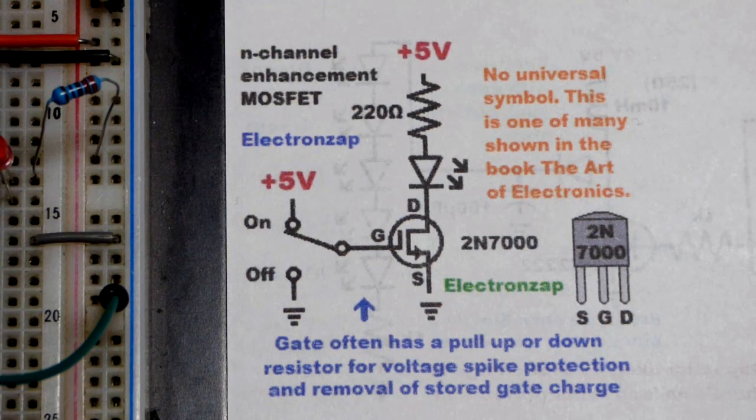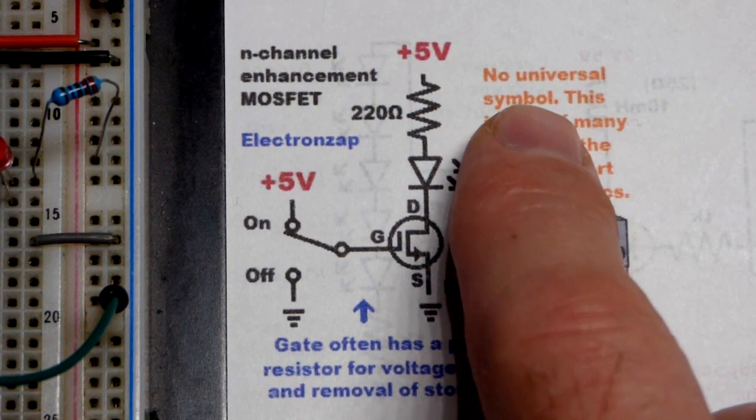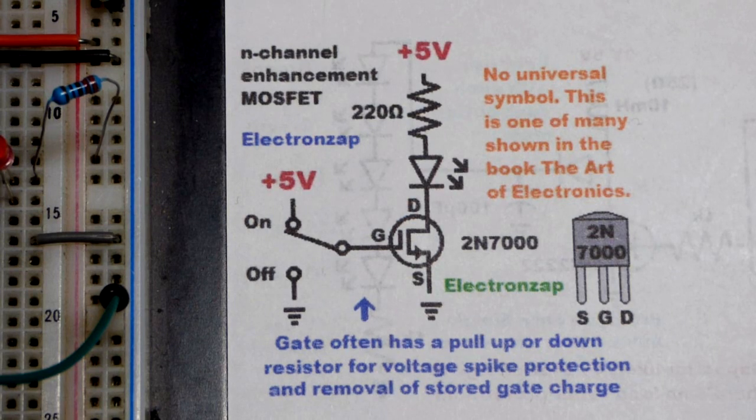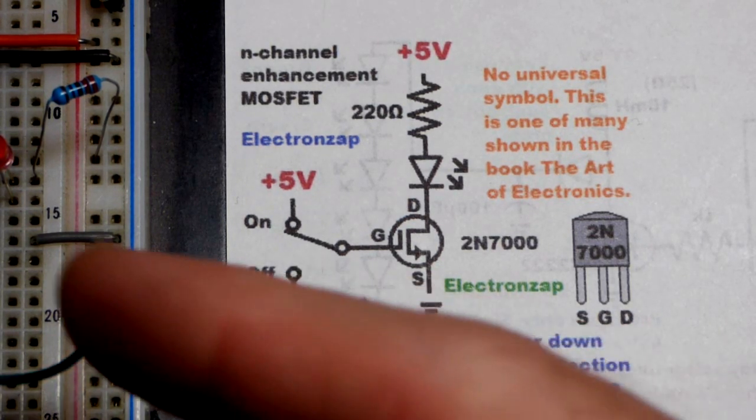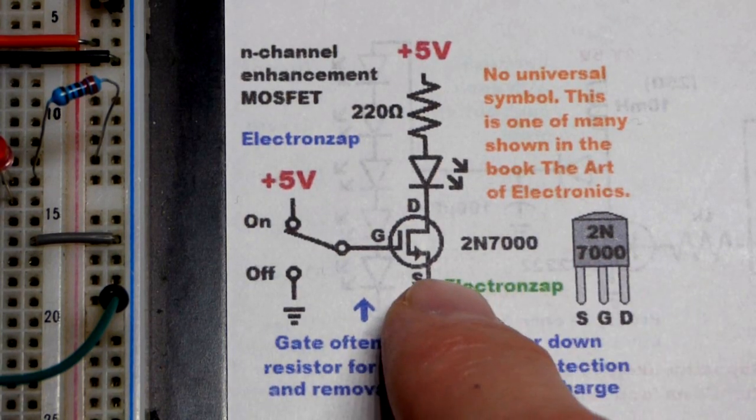use one that they actually show. They show a whole bunch of different variations. This is not a universal symbol—there's all kinds of different symbols you could use. A lot of them look more complex for other circuitry that depends on other properties they have, especially if they're in a different package. But